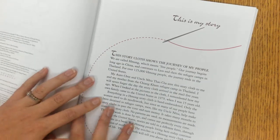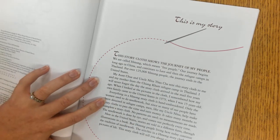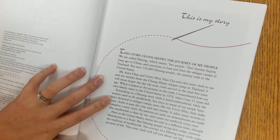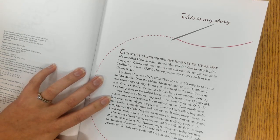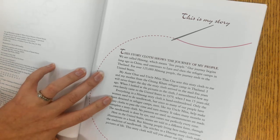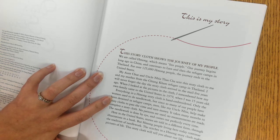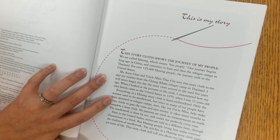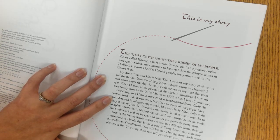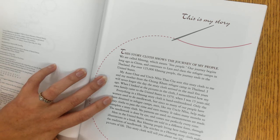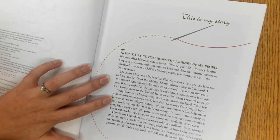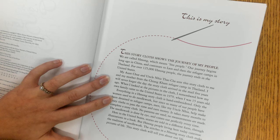This is my story. This story cloth shows the journey of my people. We are called Hmong, which means free people. Our journey begins long ago in China and continues to the refugee camps in Thailand. For over 125,000 Hmong people, the journey ends in the United States. My aunt Chu and my uncle Nga Thao Chai sent this story cloth to me and my mother from the Changkham refugee camp in Thailand. I will never forget the day the story cloth arrived in the mail five years ago.